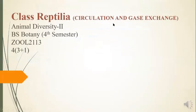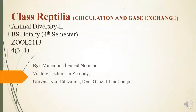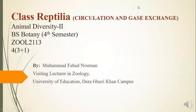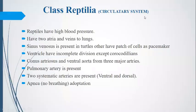Now we are going to study the circulation and gaseous exchange of class Reptilia. Reptiles have high blood pressure and have two aortae. The high blood pressure in reptiles is because the body is very long compared to amphibians. It is phylogenetically established that reptiles have ancestors in the form of amphibians. Reptiles are very long, and that's why they have high blood pressure.